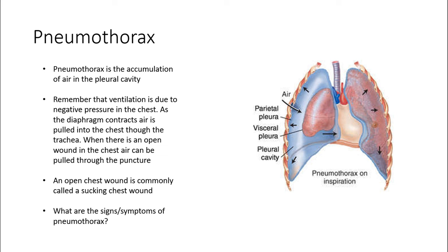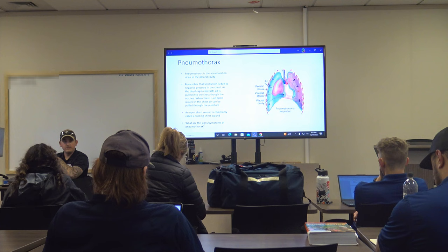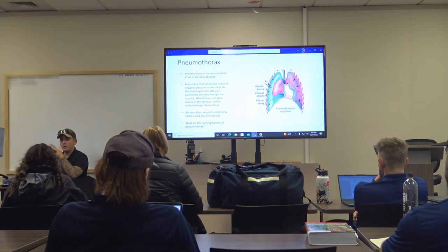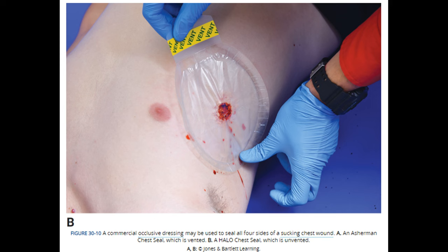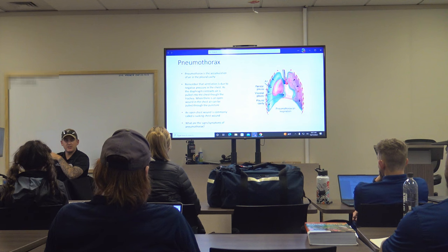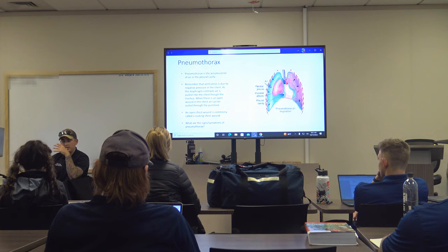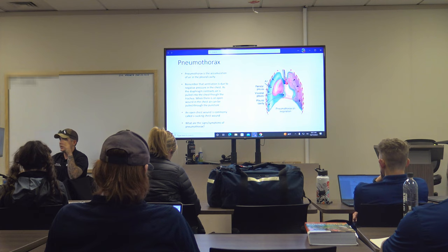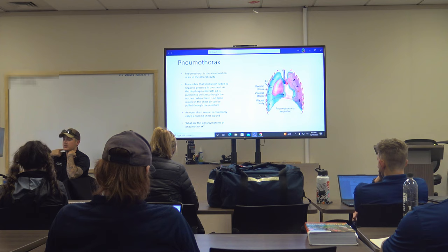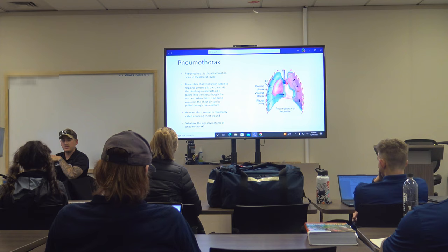An open chest wound is commonly called a sucking chest wound. Treatment is to apply a chest seal. First, expose the patient, control bleeding, and find all the holes. Anyone with an open wound from the neck down to the hips — front and back — gets a chest seal or occlusive dressing applied.